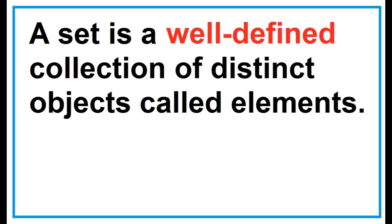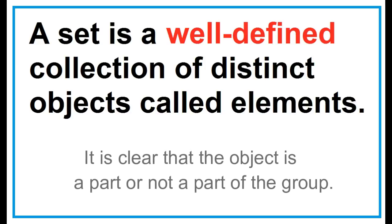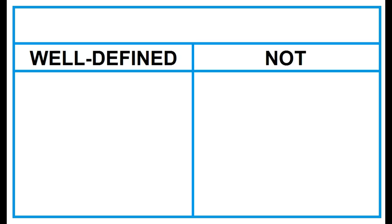A collection is well-defined if it is clear that the object is a part or not a part of the group. Example: counting numbers less than 6.